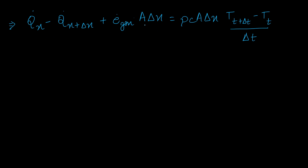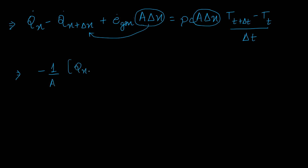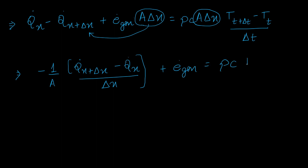Dividing everything by A·Δx and rearranging, we get: −(Q_{x+Δx} dot − Q_x dot)/Δx + e_dot_gen = ρ·C·(T(t+Δt) − T(t))/Δt.